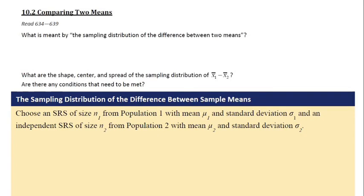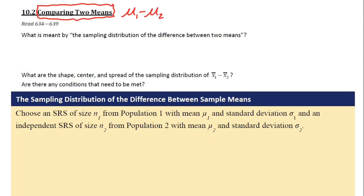The next section, 10.2, is about comparing two means. The last section was two proportions. Now we're going to look at two means, like mu1 minus mu2.